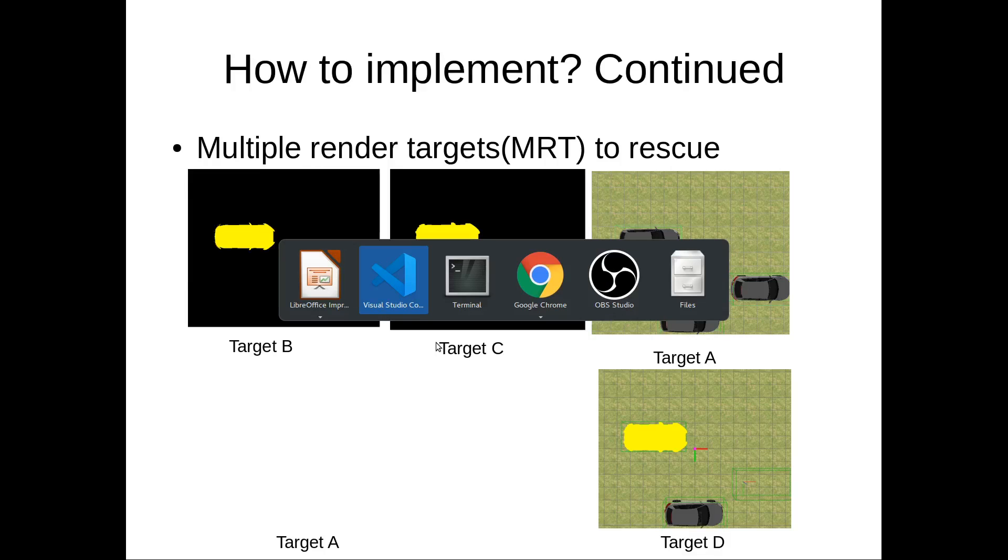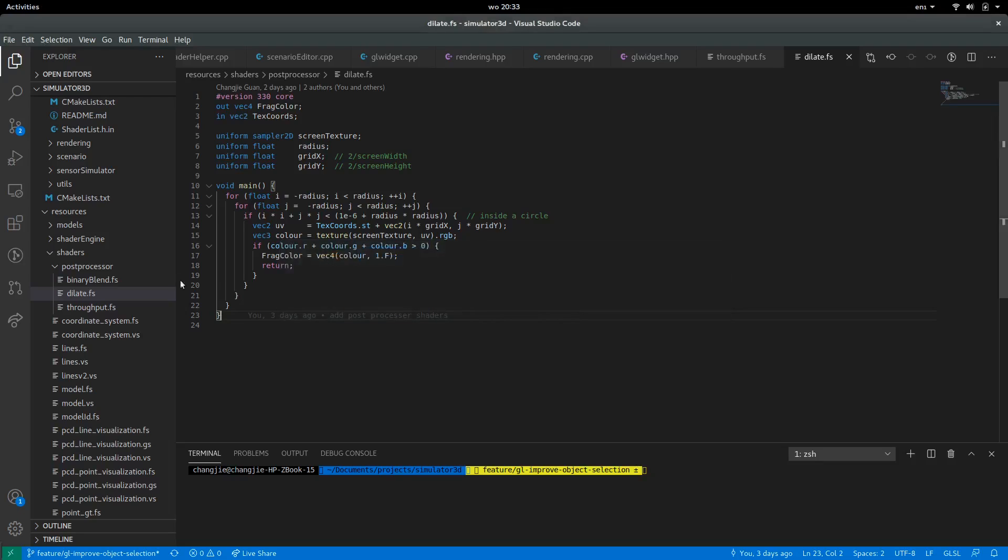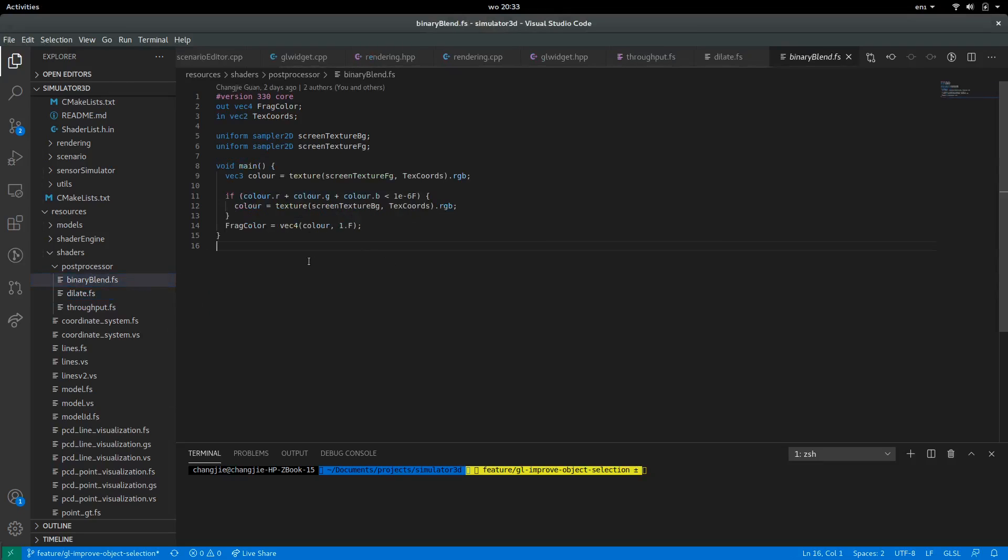We can also implement this in a simple shader. If you are interested in the shader, I can show you what it looks like. Yeah, it's very simple. Just check if the RGB pixel values are non-zero. If it's non-zero, you use it. Otherwise, you use the background pixel.